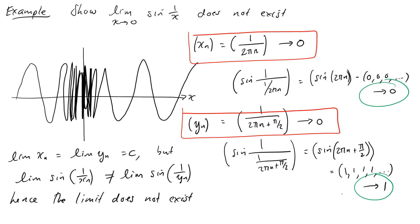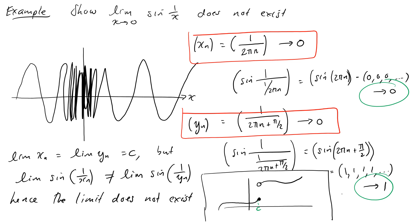You can also use the divergence criterion effectively for piecewise functions with a jump discontinuity. We're used to saying the limit does not exist by comparing left and right-hand limits. But we can also use sequences: take one sequence of x values converging to c from the right, and another converging to c from the left. Their corresponding function values will converge to the two different sides of the jump, so the limit doesn't exist. That's another way of justifying this using the sequence characterization.